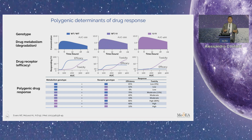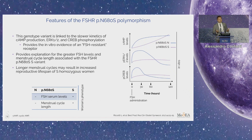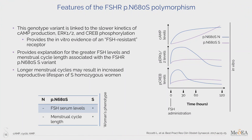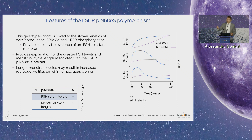We know that there are specific genetic traits — called polymorphisms — that are quite common and are related with hyper-response. They can influence both metabolism or the interaction with receptors, especially the FSH receptor, which is the most important one for follicular growth. There is a very common polymorphism consisting in a single amino acid substitution that provides in vitro evidence of an FSH-resistant receptor. It seems that this receptor does not work properly when we have both mutated or both polymorphic alleles.